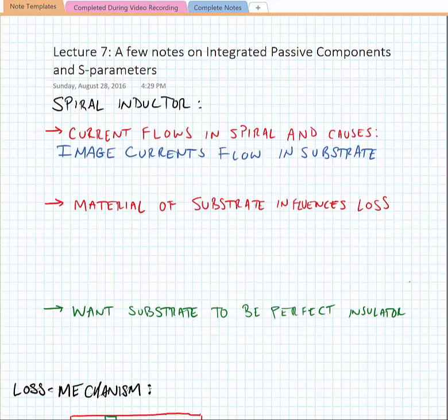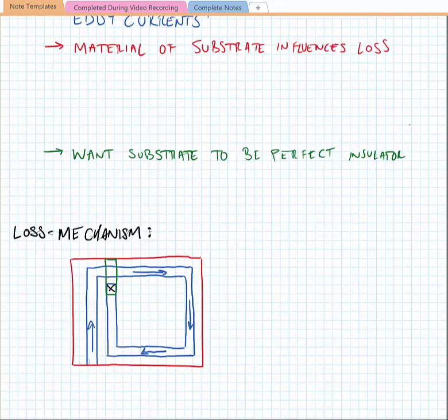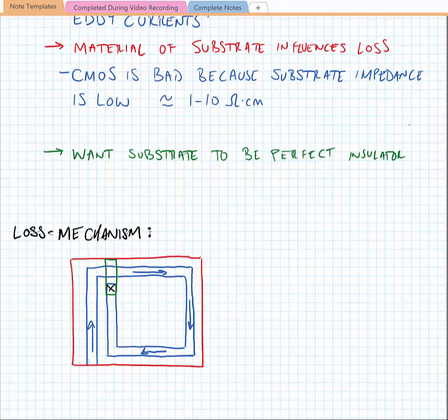Sometimes these image currents are called eddy currents, and the reason they're called eddy currents is an eddy is like a small whirlpool, so a spiral flowing in the substrate might look to us from a graphical perspective like a small whirlpool flowing in the substrate. The material of the substrate influences the loss in the inductor heavily, particularly because this eddy current that flows in the material will have ohmic losses. CMOS is a particularly bad material because the substrate impedance is typically fairly low on the order of 1 to 10 ohms per centimeter. In an RF process we may be able to get this up to somewhere around 100 ohm centimeters, but nonetheless it's a fairly low number.